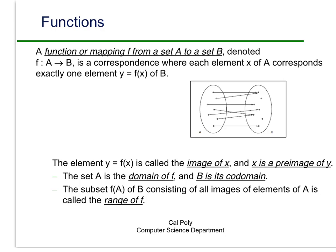So the definition of a function or a mapping from a set A to a set B, and we usually write that this way, F with a colon A to B, is a correspondence where each element of A corresponds to exactly one element of B. So in other words, there can't be two elements in B that correspond to an element of A.